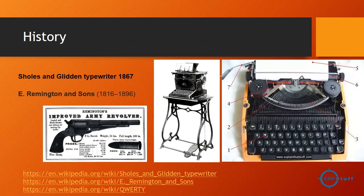A little bit about history. This typewriter was started by Sholes and Glidden in 1867. When they started making this typewriter and its keys, later it was acquired by Remington and Sons, who were also manufacturers of revolvers.